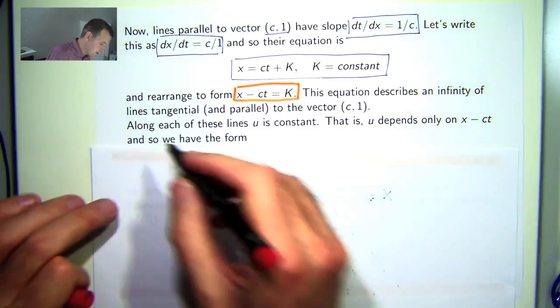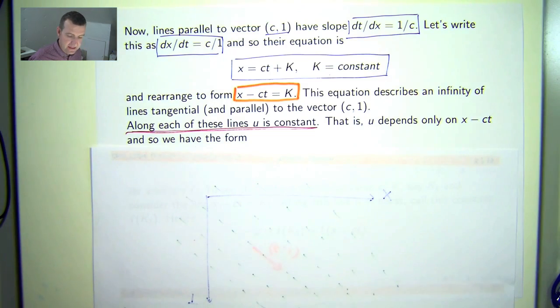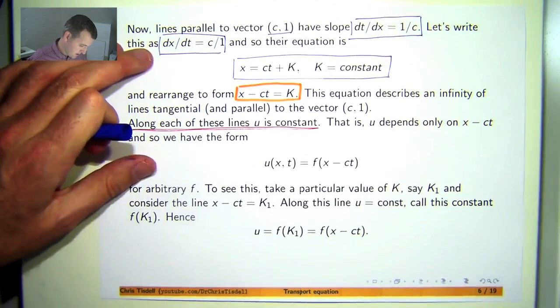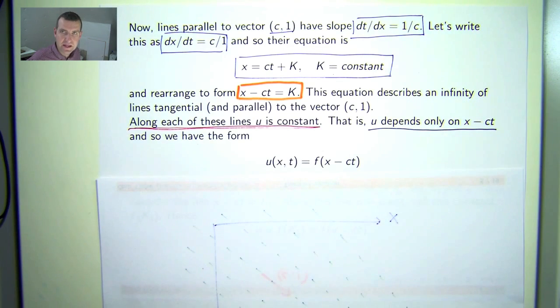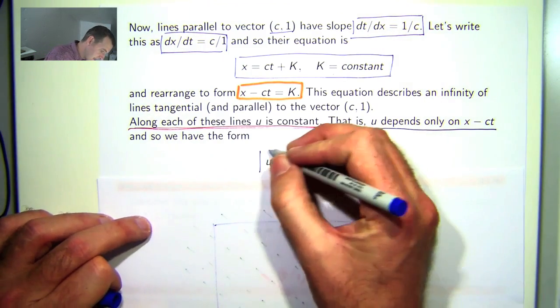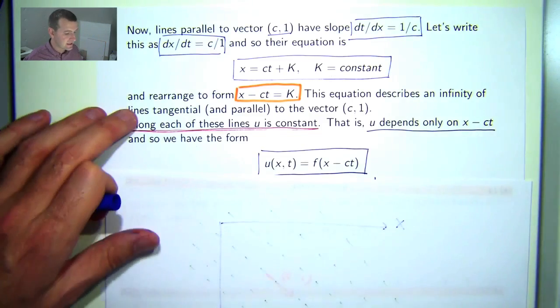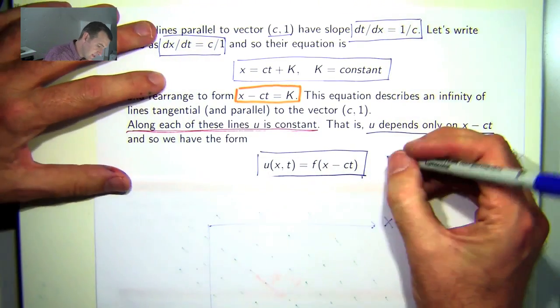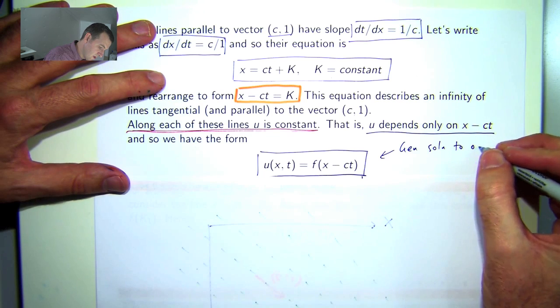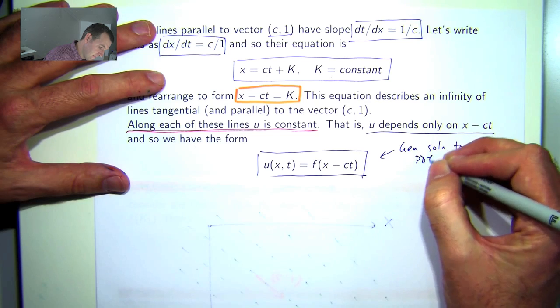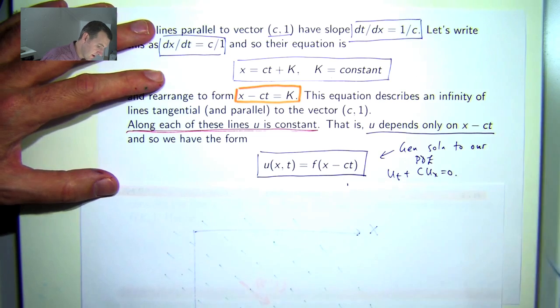Now along each of these lines, the solution to our transport equation is constant. That is, u only depends on x minus ct. So what does that mean? The solution u depends on x minus ct. What that means is that our solution is a function of x minus ct. So this then is the general solution to our PDE u sub t plus c u sub x equals zero. Our transport equation.